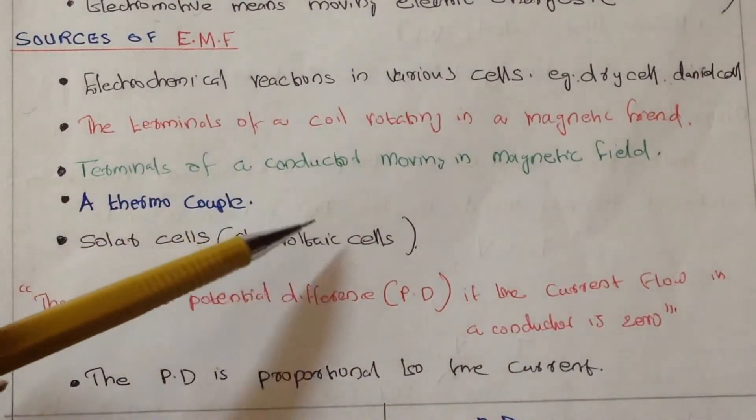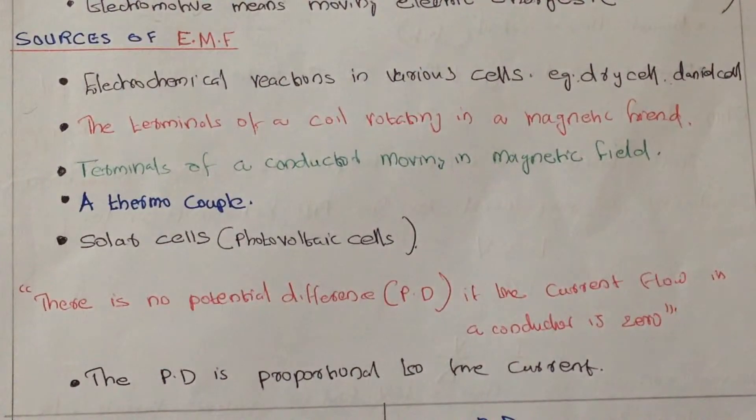And the third one is terminals of a conductor moving in a magnetic field. If some conductor is moving in a magnetic field, it definitely cuts the magnetic field and EMF will be produced.